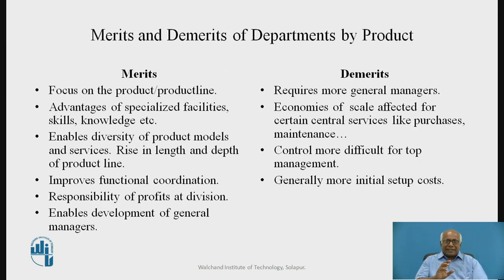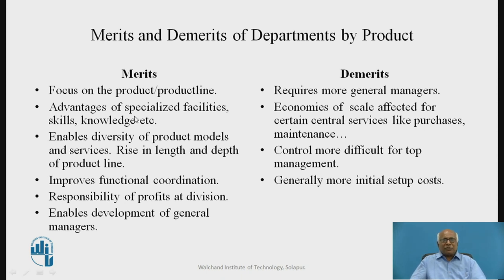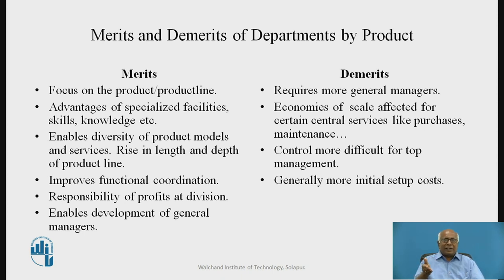There are certain merits and demerits of each. In the merits, we can see focus on the products or product lines — there is focus of the entire department on a particular product and product line. Naturally, research and development, catering to needs of the customer, adding features in the product, removing drawbacks in the product — all that is focused. The second advantage is that we are using specialized facilities for that product manufacturing, with all the advantages of specialized machines, specialized skills, and specialized knowledge. Each specialization leads to increased efficiency, cost control, and rise in quality.